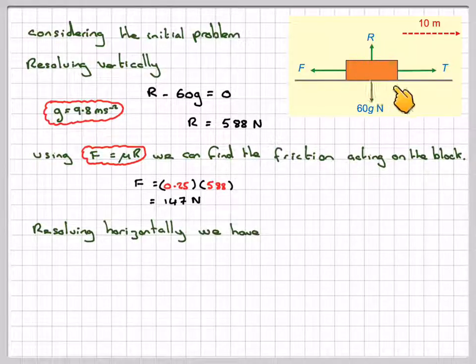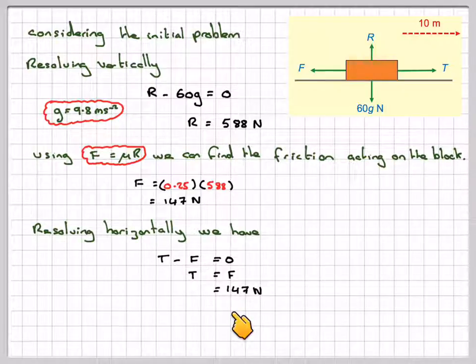Resolving horizontally, so this way now, we're going to have that T minus F is equal to 0, T will be equal to F, and we found that F was 147, so T will be equal to 147 newtons.